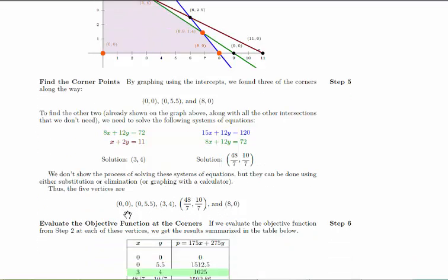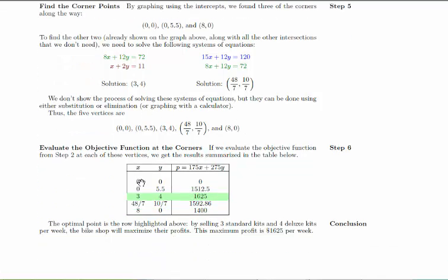Thus, the five corner points are listed here. And our last step is to evaluate the objective function at the corners. Because remember, the fundamental theorem of linear programming says that the maximum and the minimum are going to occur at one of these corners. So, going down here, we evaluate at each corner what the objective function is. So we list x and y for each of the corner points. And then plug those into the objective function that we found in the second step. Looking here, the minimum is zero, but that's not what we want. We want the maximum, which is 1625, which occurs when x is 3 and y is 4. So this is the optimal point.